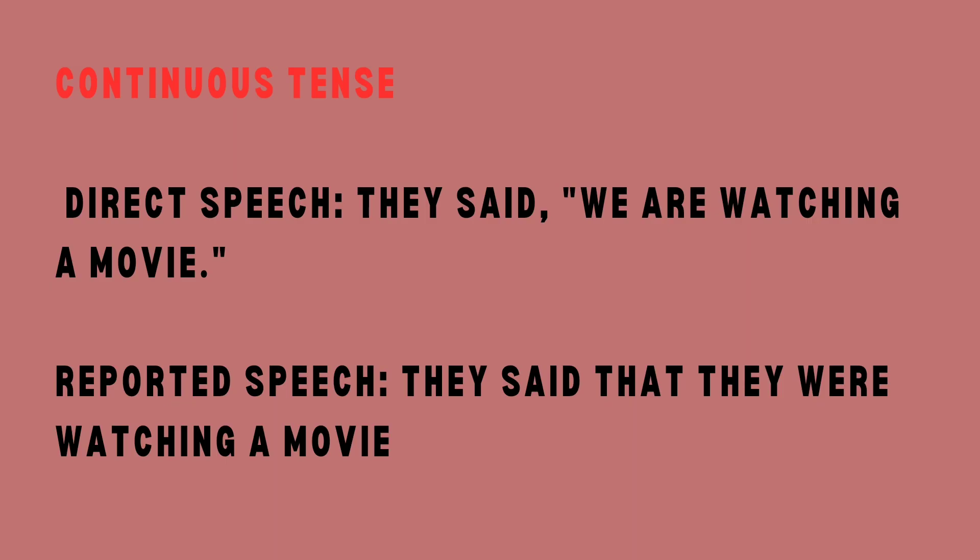Continuous tenses: continuous tenses, like present continuous and past continuous, often change to their respective past continuous or past perfect continuous forms in reported speech. For example, direct speech: they said, 'We are watching a movie.' Reported speech: they said that they were watching a movie.